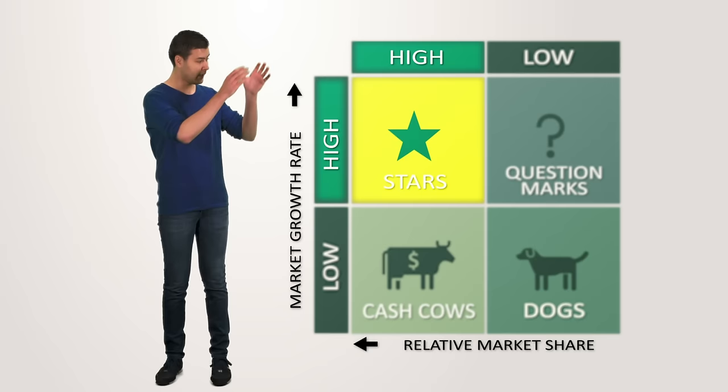In the end, corporations will need a balanced portfolio of question marks, stars and cash cows to assure positive cash flows in the future. Or, as Bruce Henderson once wrote years ago: Every company needs products in which to invest cash. Every company needs products that generate cash. And every product should eventually be a cash generator. Otherwise, it is worthless. Only a diversified company with a balanced portfolio can use its strengths to truly capitalize on its growth opportunities.